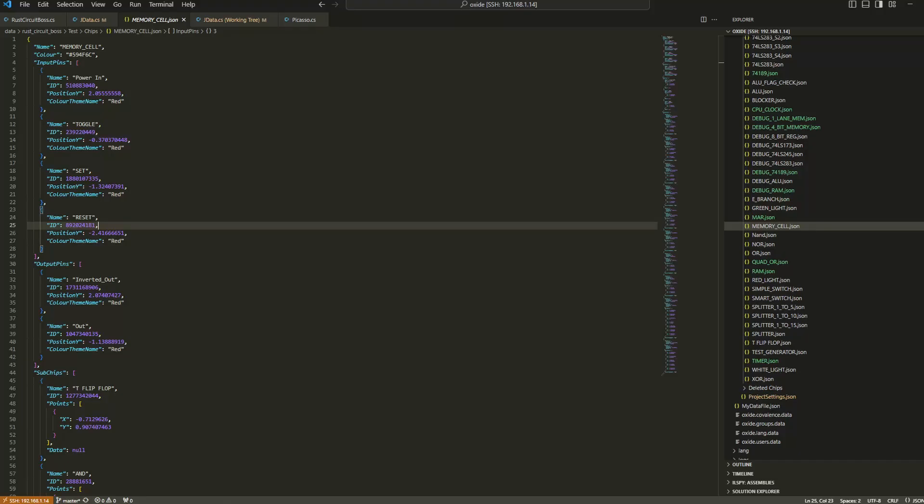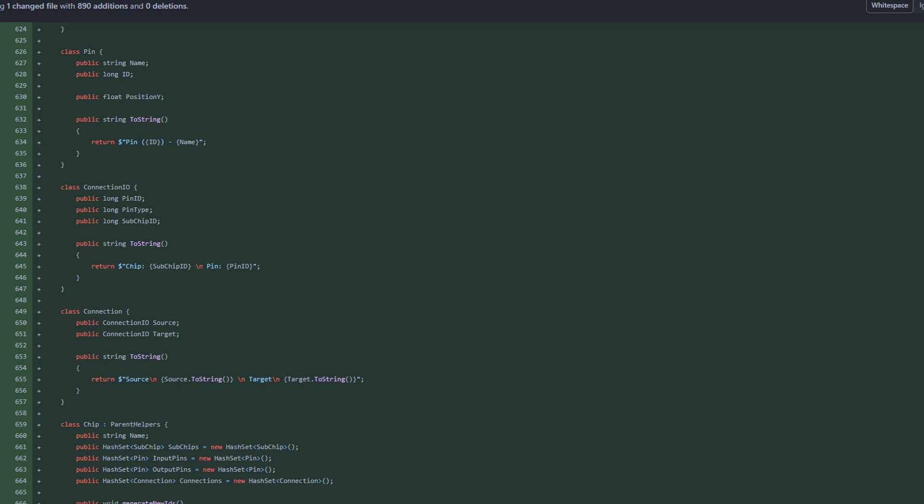The first step was reading the JSON files that came from DLS. Every JSON file within the chips directory would be the instruction on how to build that particular chip. So I built some classes that are one-to-one conversions with the data from the JSON file, and then deserialized the JSON data into our classes.